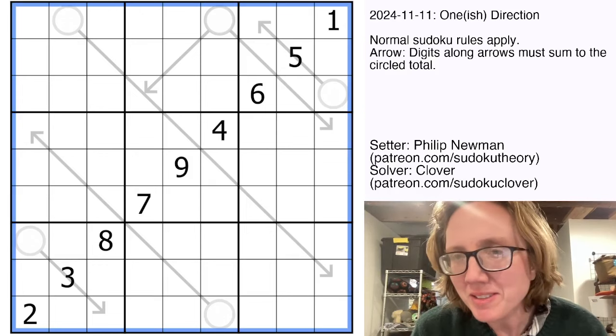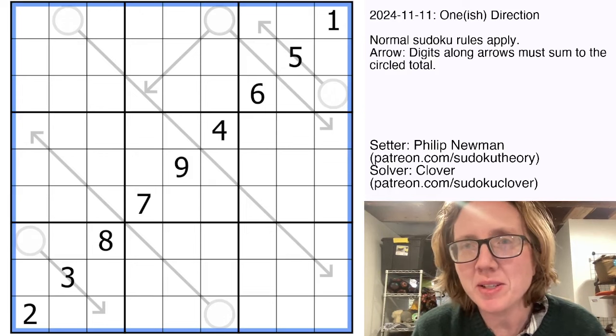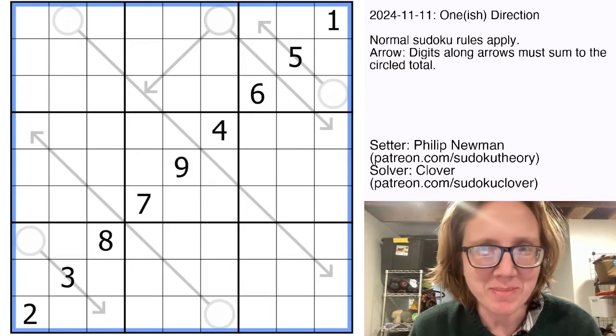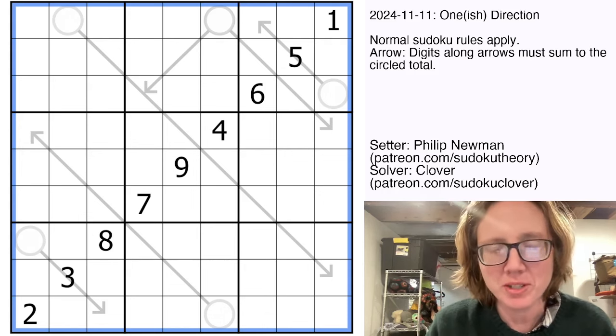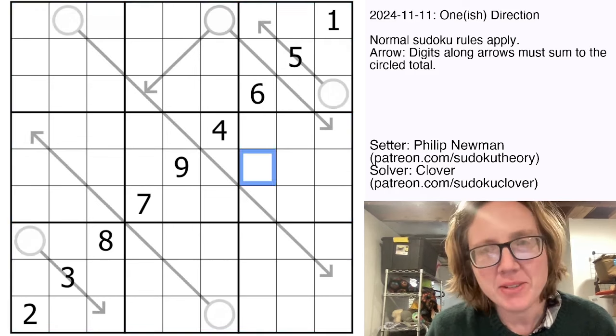Hello, my friends. I'm Clover. This is Gass, and today we are solving one-ish direction by Philip Newman. This was posted in Gass on November 11th, 2024, and it is an arrow sudoku.